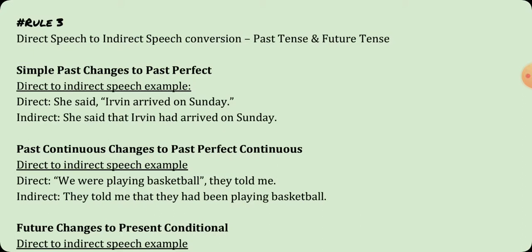Simple past tense changes to past perfect. For example, 'She said Irwin arrived on Sunday' in indirect speech becomes 'she said that Irwin had arrived on Sunday.' Past continuous tense changes to past perfect continuous. For example, 'We were playing basketball, they told me' becomes 'they told me that they had been playing basketball.'